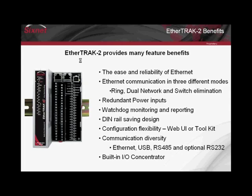Dual Ethernet ports have three different jumper-selectable modes. Ring mode uses the 6Net ring protocol for fast recovery on Ethernet failure. Network mode allows each Ethernet port to be on a separate Ethernet network with differing subnet masks. Switch elimination mode allows daisy-chaining multiple modules without the use of another switch. There are also redundant 10 to 30 volt DC inputs.